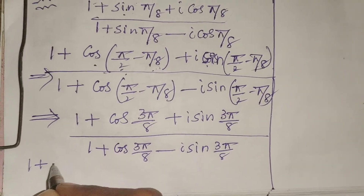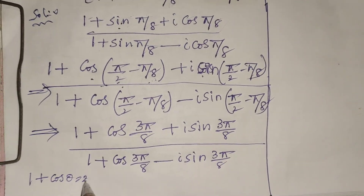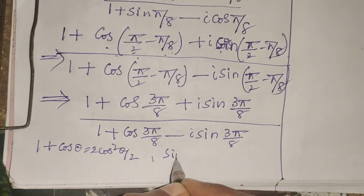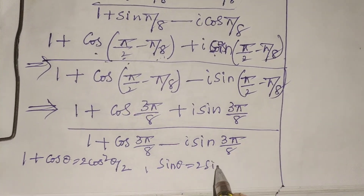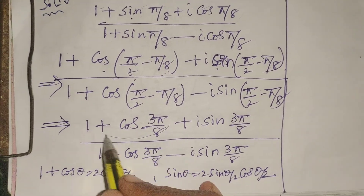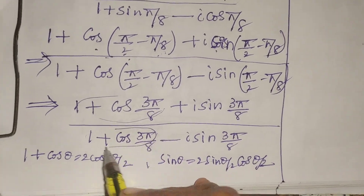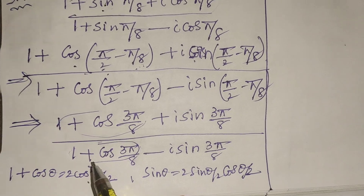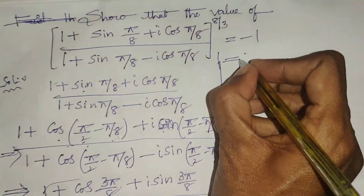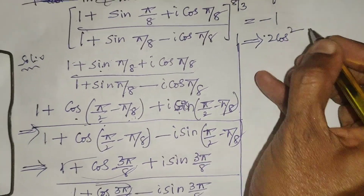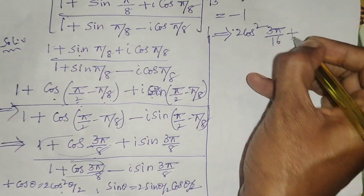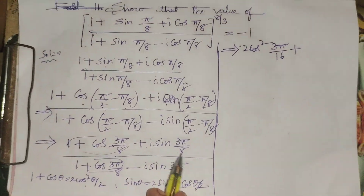We know the formulas: 1 + cos θ = 2·cos²(θ/2) and sin θ = 2·sin(θ/2)·cos(θ/2). Applying these to both numerator and denominator: 1 + cos(3π/8) becomes 2·cos²(3π/16), and i·sin(3π/8) becomes i·2·sin(3π/16)·cos(3π/16).